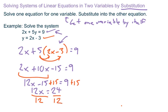That gives me 12x equal 24. And to get the x completely by itself, divide both sides by 12. And that would give me x is equal to 2. And that was pretty easy.